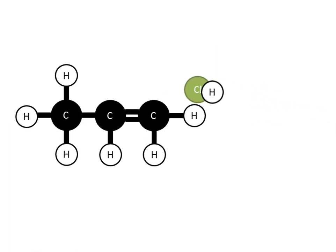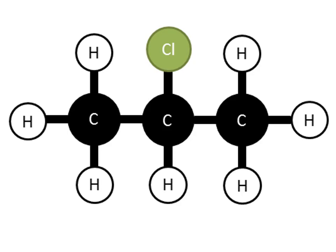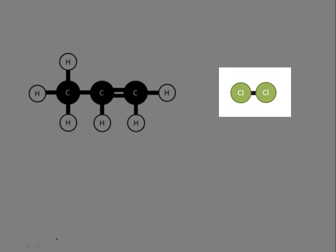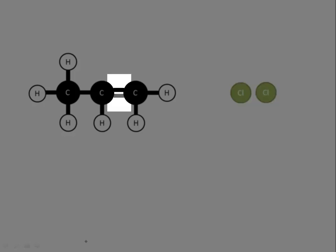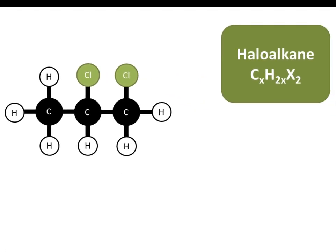In the reaction with HX, the hydrogen and halogen separate, the double bond breaks, new bonds form, and the haloalkane is produced. With X₂, the bond between the two halogen atoms in the diatomic molecule breaks, the double bond breaks, new bonds form, and we get a haloalkane with formula CₓH₂ₓX₂.